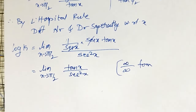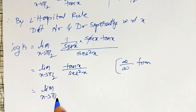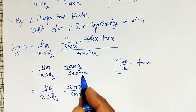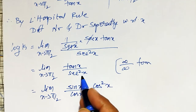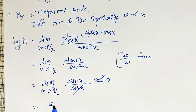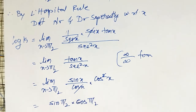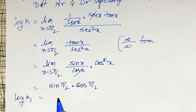To avoid applying L'Hôpital's rule again, I rearrange: tan x divided by secant squared x. Writing tan x as sin x divided by cos x, and 1 by secant squared x as cos squared x, one cos cancels to leave sin x into cos x. Therefore limit as x tends to pi by 2 gives sin(pi/2) into cos(pi/2), which is 1 times 0 equals 0. So log k equals 0.